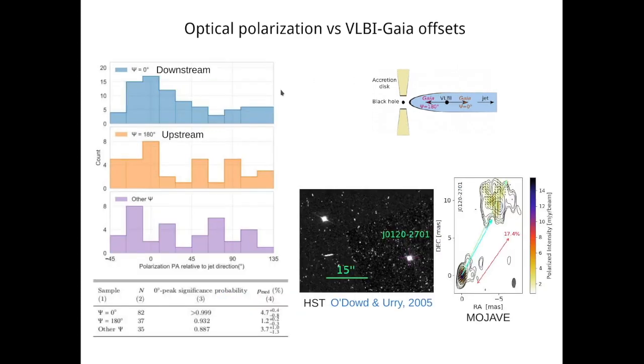This plot on the left shows how the position angle of the polarization direction behaves among the sources of the three samples. We count this position angle with respect to the jet direction, and we see that there is a prominent peak for the downstream sample at zero. This means that the polarization plane is parallel to the jet direction. And this peak at zero is doubtful in the two other samples. So in order to assess the significance of this peak we use the bootstrap method. In this table we show the probabilities that this peak is real. For the downstream sample this probability is higher than 0.999, while for the other two samples it's not so significant.